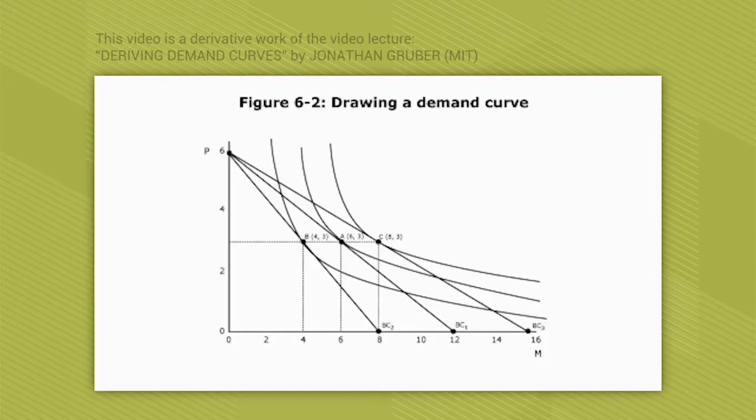What we said last time is, given your utility function u equals square root of p times m, you would choose a point like A. If the price of pizzas was $16, the price of movies was $8, and your income was $96, you would choose point A where you're consuming six movies and three pizzas. That should be p on the y-axis.